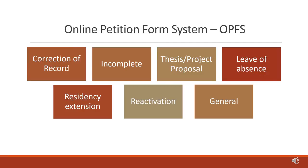If your leave of absence request is approved, the semester away will not count toward your maximum residency. A Residency Extension petition is used in case you reach the maximum residency and are still not ready to graduate — you can request up to two additional semesters at a time. A Reactivation petition is used if you do not register for a semester and your record becomes inactive. A General petition can be used for transferring credits, requesting deadline extensions, or for any other matters that do not fit into one of the other categories.